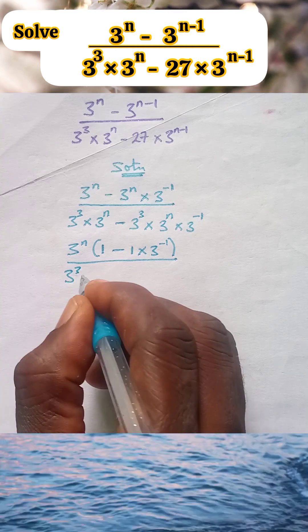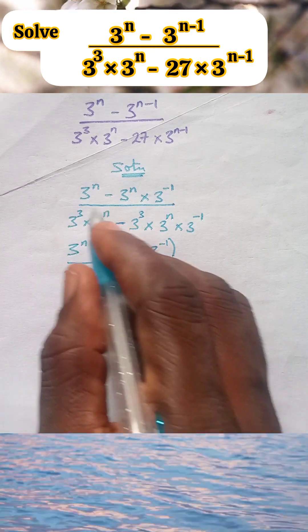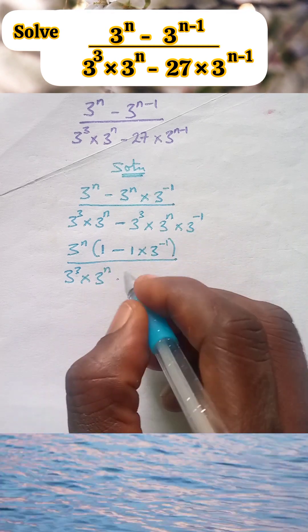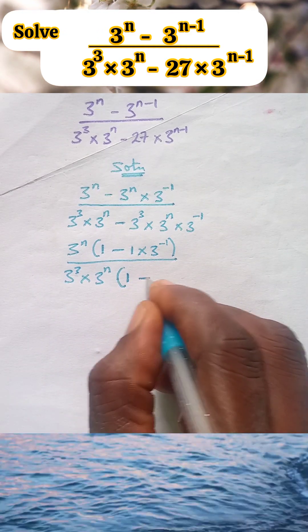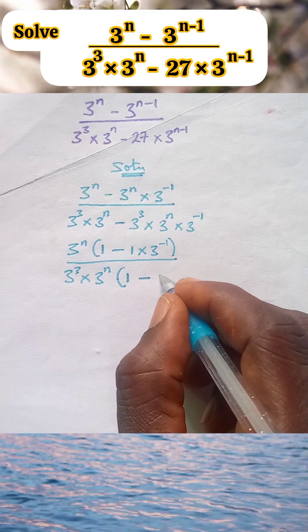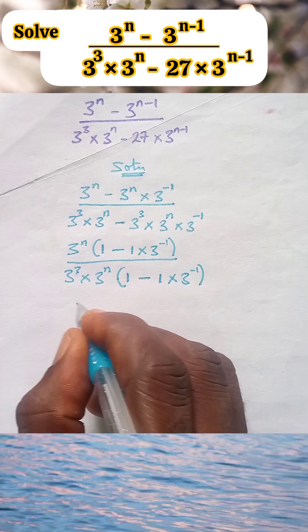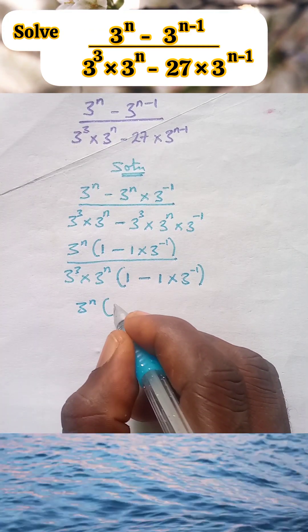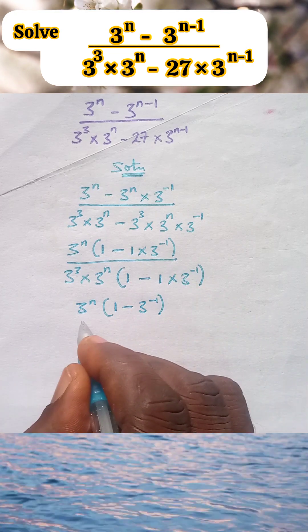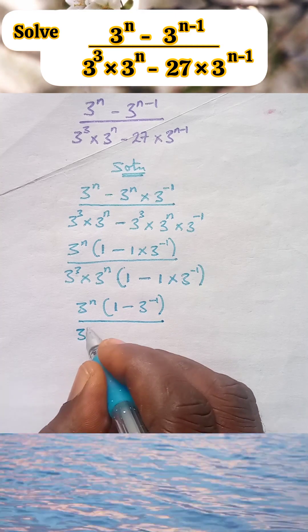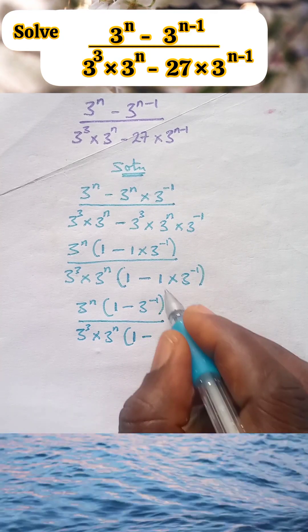3 raised to the power 3 times 3 raised to the power n — this 3 raised to the power n is common here and also common on the other side, so we bring it out and factorize. We get 3 raised to the power n times 3 raised to the power minus 1, covering the brackets, all over 3 raised to the power 3 times 3 raised to the power n, bracket open, 1 minus 1 times 3 raised to the power minus 1.